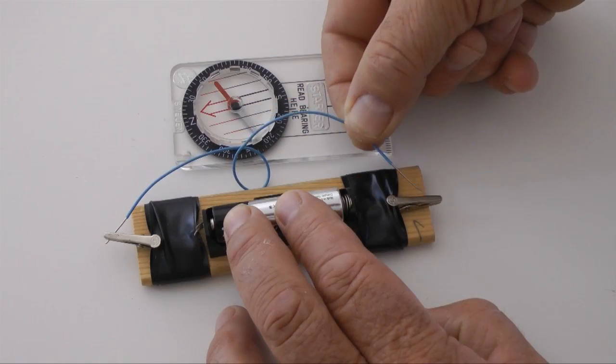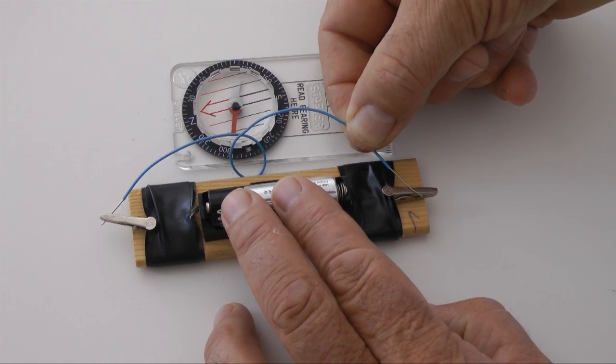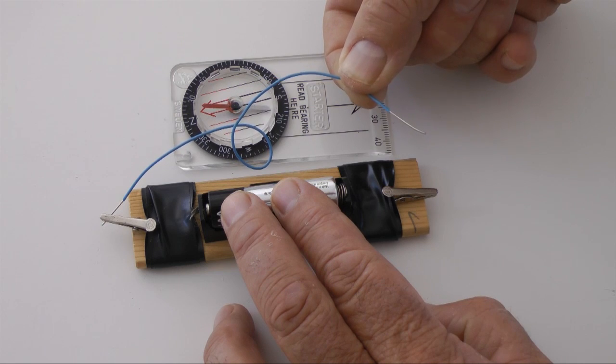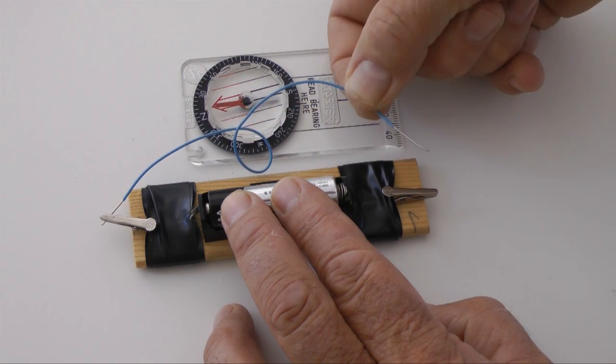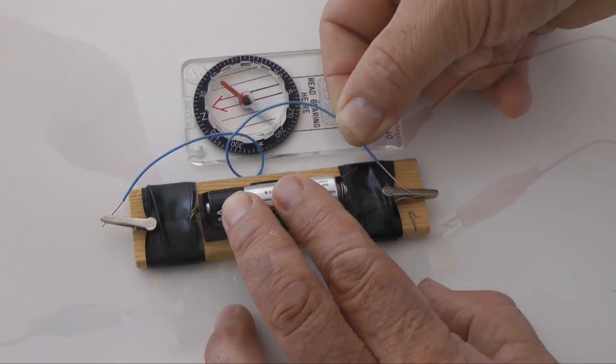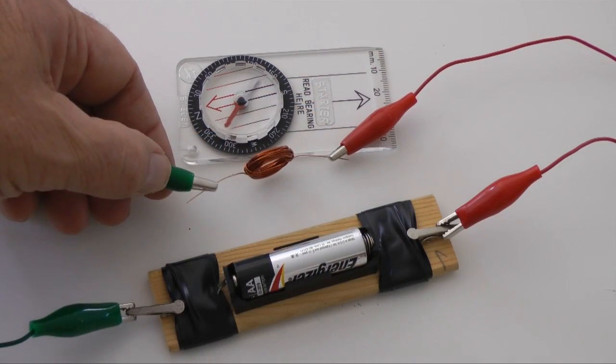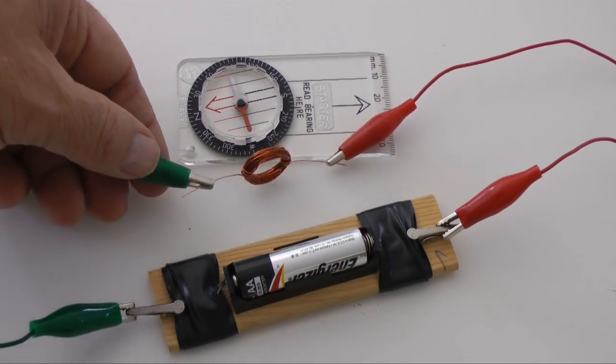Solenoids function by using the magnetic field that appears when electricity flows through a coil of wire. The moving needle in this compass reveals the presence of a magnetic field. Well-designed coils can produce powerful magnetic fields.